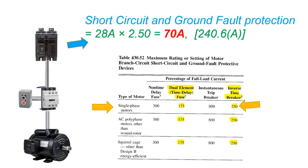For short circuit and ground fault circuit protection: 28 amperes times 250 percent equals 70 amperes, as per Table 430.52. The 250 percent is the allowable percentage of full load current for an inverse time breaker. The standard breaker size is selected from Table 240.6(A).